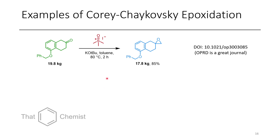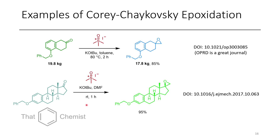Let's look at some examples of Corey-Chaykovsky epoxidation. In this first example, the DMSO-derived sulfonium oxide iodide is able to form an epoxide on a ketone without any issue, and on an 18-kilogram scale, which is massive. In another example, we have a ketone that is a derivative of cholesterol, which undergoes epoxidation forming a single enantiomer and a single diastereomer.